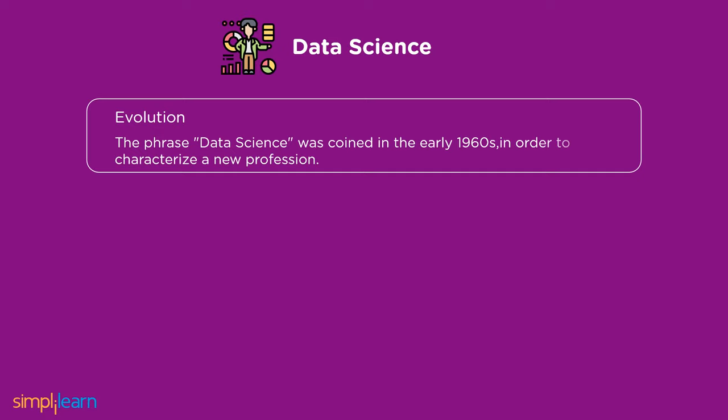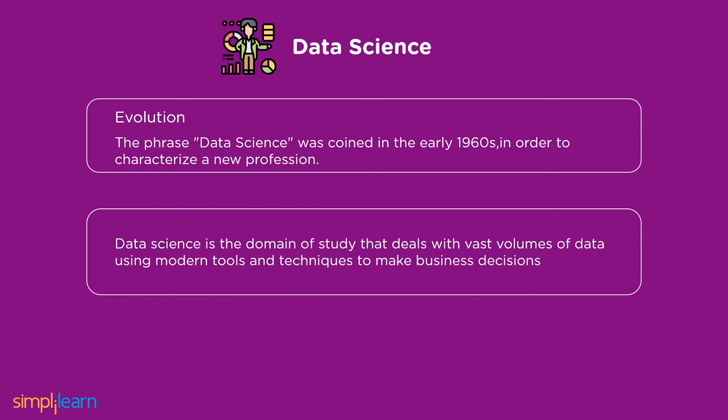Since its beginnings, data science has expanded to incorporate ideas and methods from other fields, including artificial intelligence, machine learning, deep learning, and so forth. Data science can be defined as the domain of study that handles vast volumes of data using modern tools and techniques to find unseen patterns, derive meaningful information, and make business decisions. Therefore, data science comprises machine learning, artificial intelligence, and deep learning.